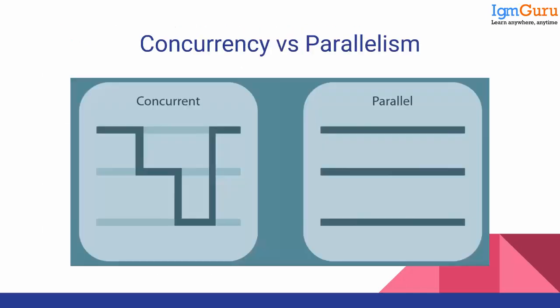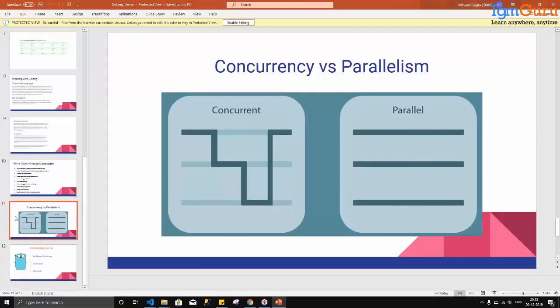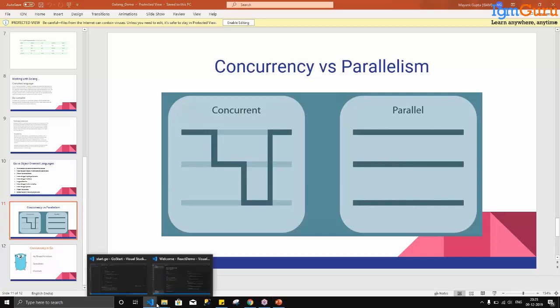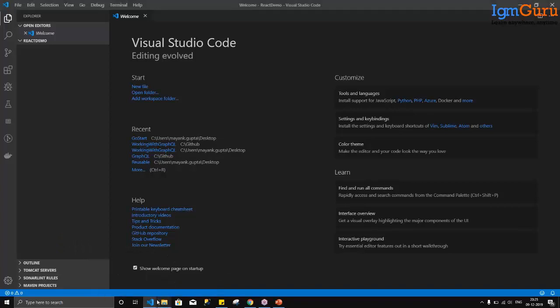Before stepping further into concurrency and parallel processing, let's move to a very small program. Whenever we start learning any programming language, we begin with a Hello World application. What we'll try to do right now is create a small program in Golang to display some random text — Hello World — and see syntactically how easy it is to get this small program up and running.